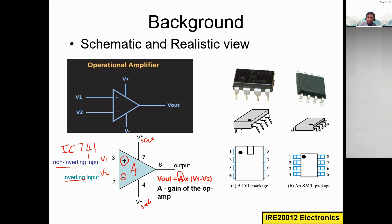These are the operational amplifier chips as they appear in practice. You need to know how to identify the pins. The IC has eight pins — four on each side. There is a small round notch or dot on the chip; this helps you identify pin numbers. With the notch in front of you, pin 1 is on the left, followed by pins 2, 3, 4, then 5, 6, 7, and 8.